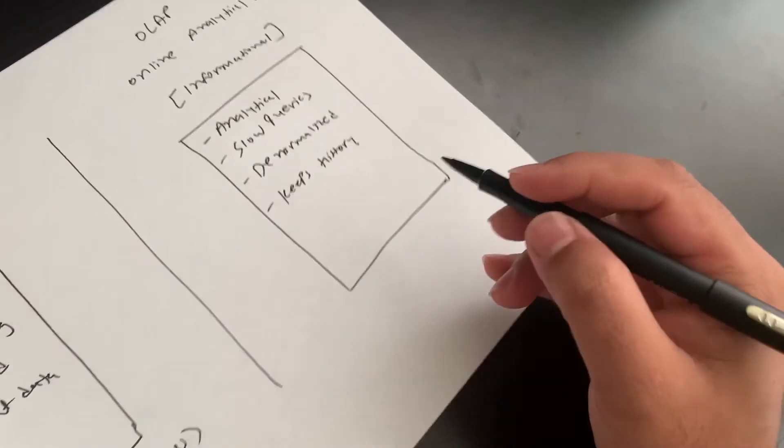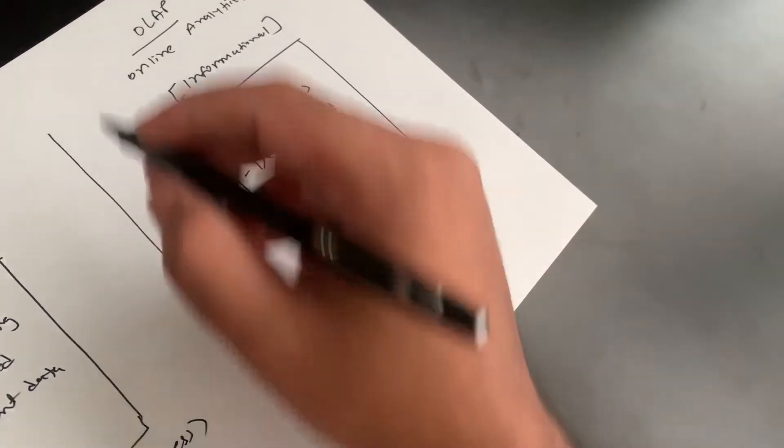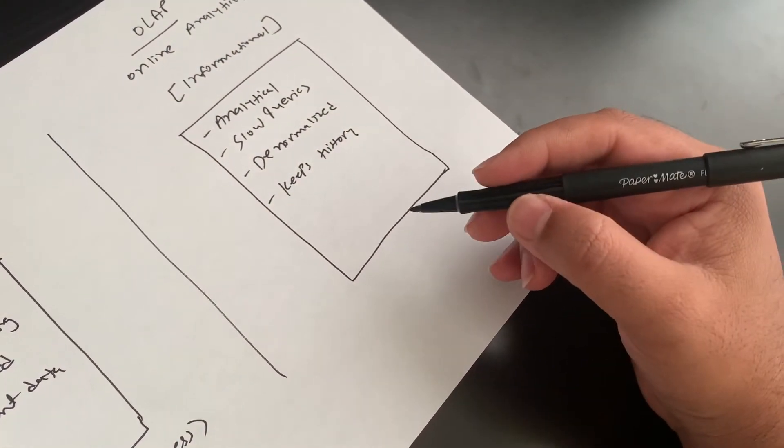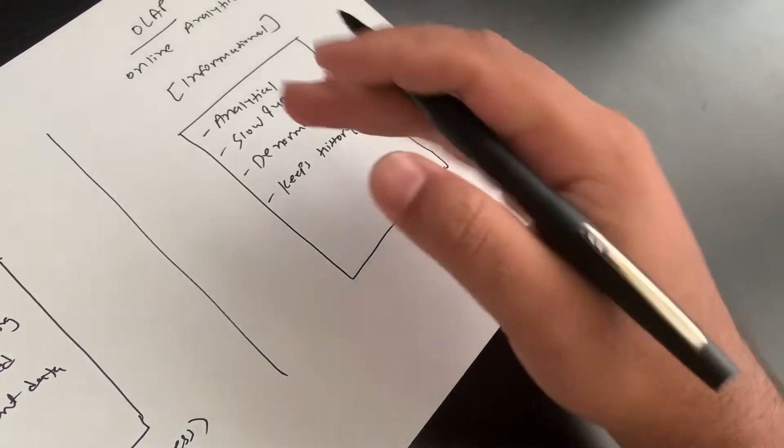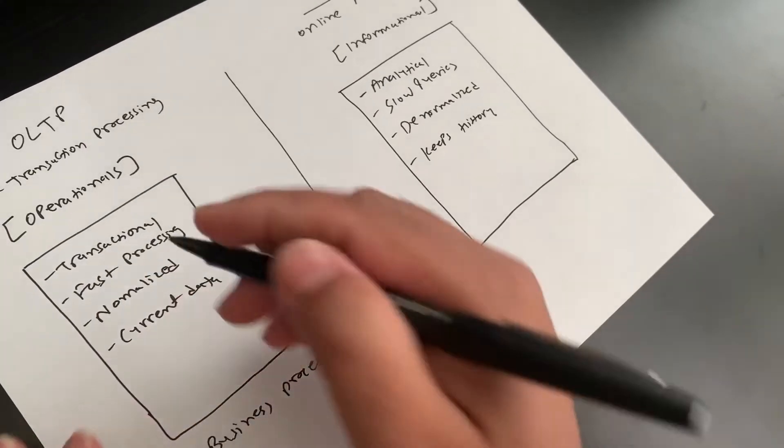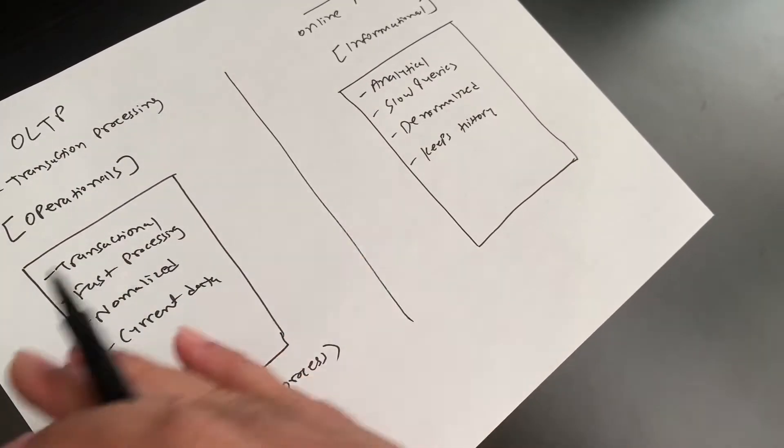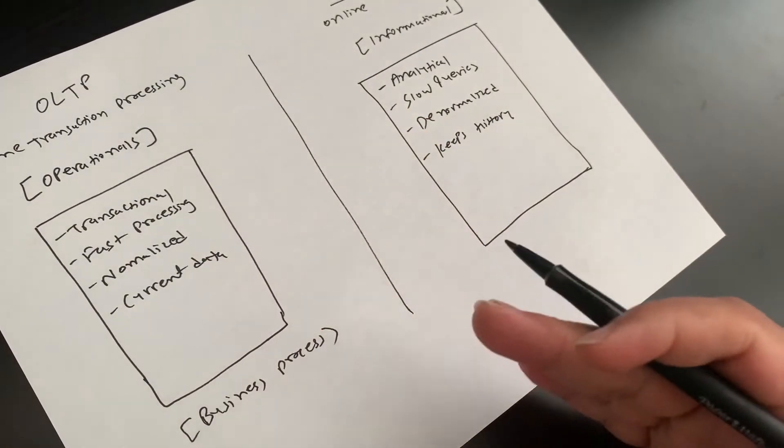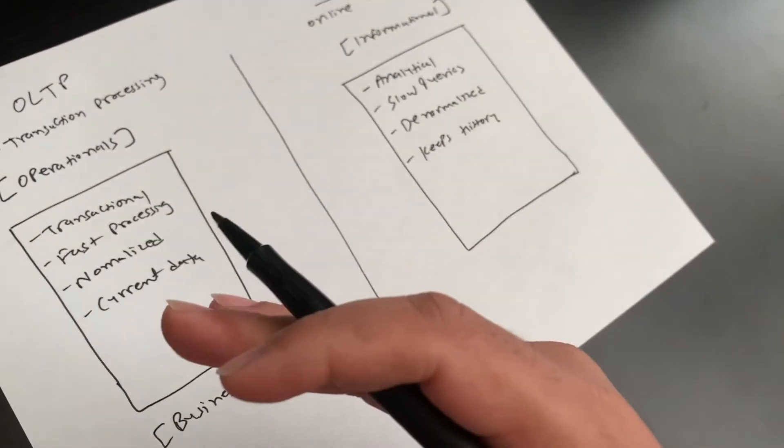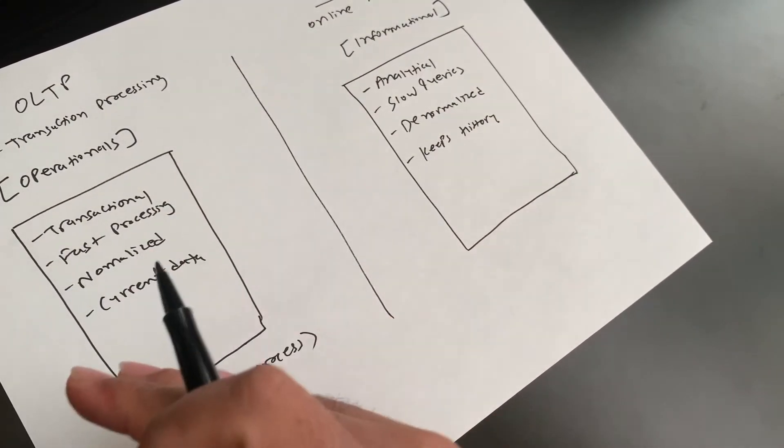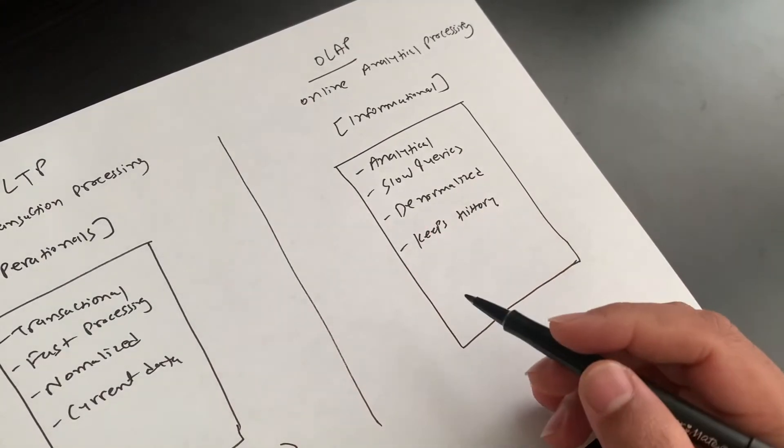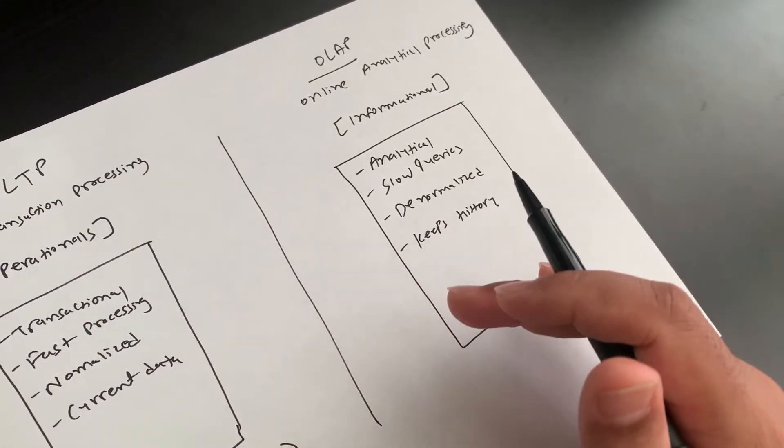So OLAP system is used for business data warehouse. Normally OLTP is like all transactional related. On front end, you have all the transactions. And then in data warehousing concept, you normally move data from OLTP system to OLAP using ETL tools. In between, you do all the transformations.